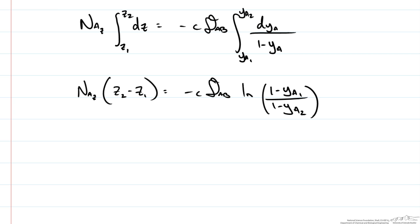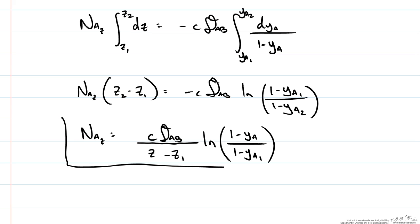And we can distribute this negative sign as well as bring the Z's to the right side to get our final flux equation. Now Z2 is not specified and we're just looking at it in terms of Z and the mole fraction YA. We can just take these two subscripts out of our equation. And this would be our final form to characterize our flux as a function of position and concentration.